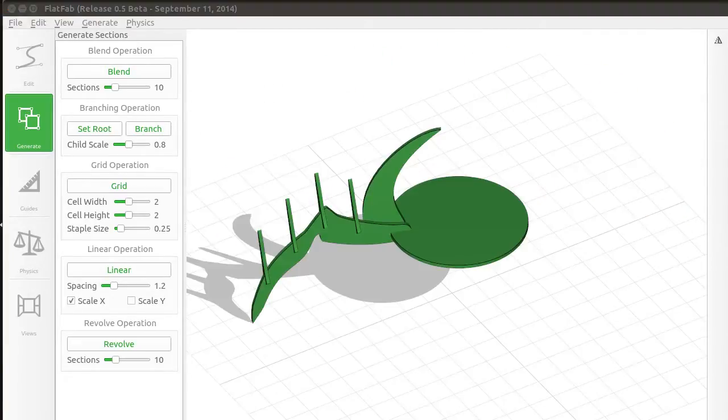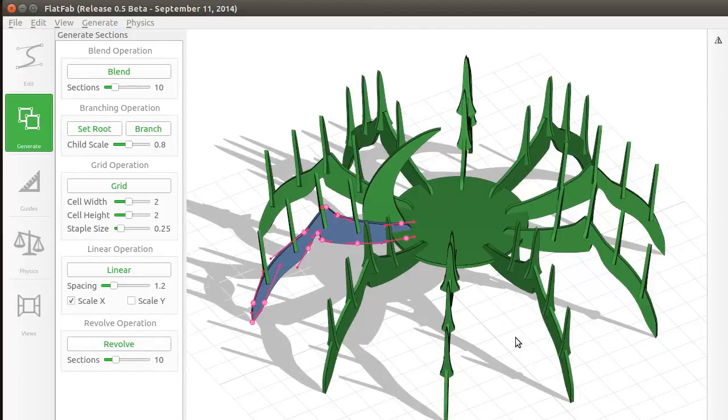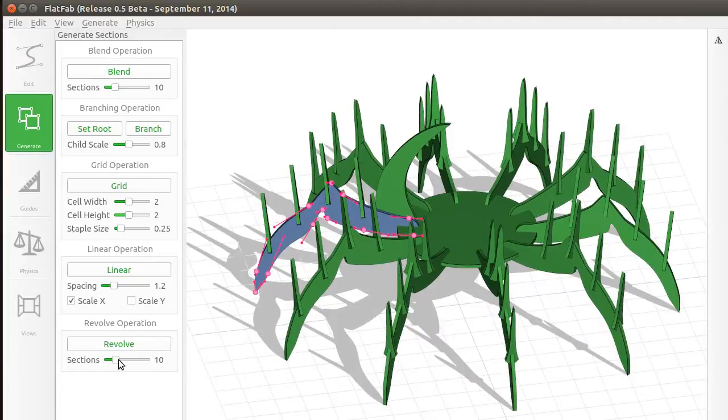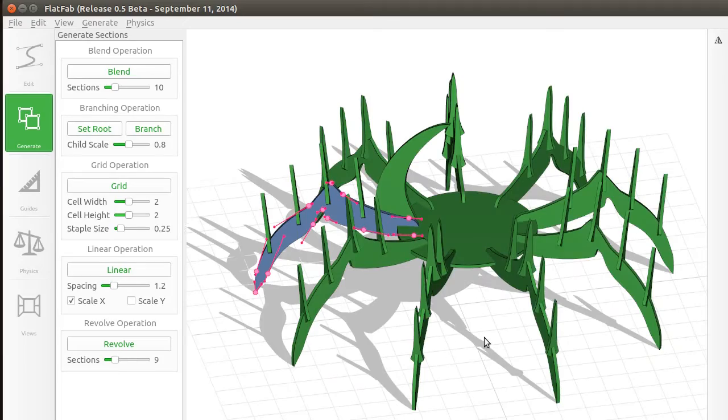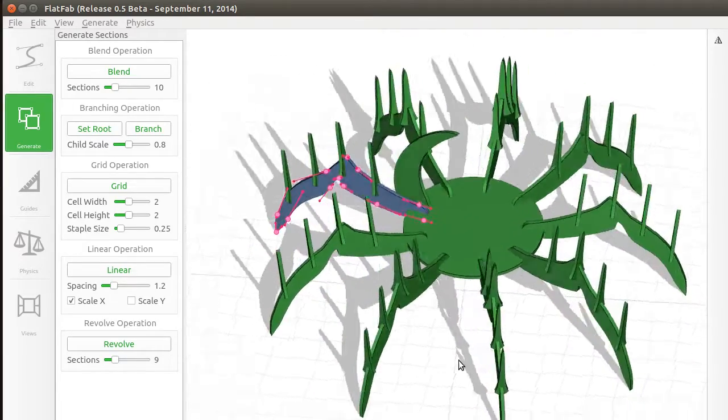The revolve operation creates duplicates along the contour of a base planar section. The base planar section is treated as the root of a tree, and the entire branch of planar sections is duplicated along it. As shown here, the branch consists of the leg and the attached spikes.